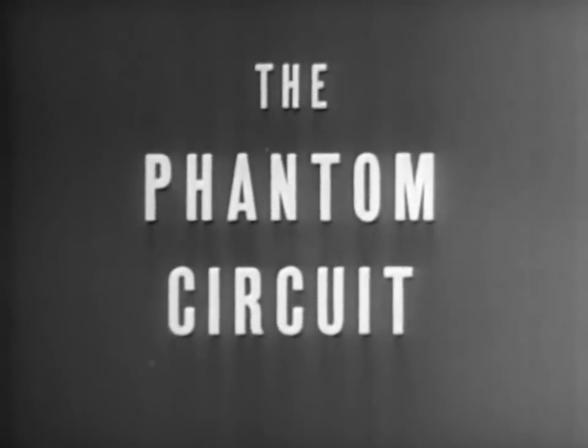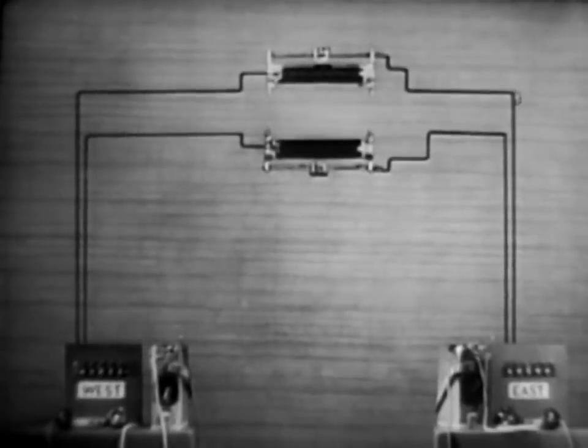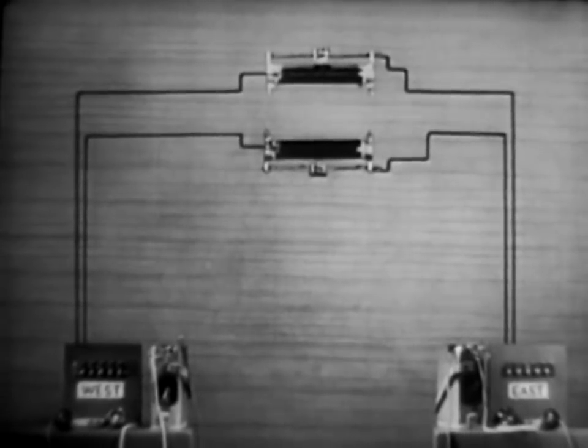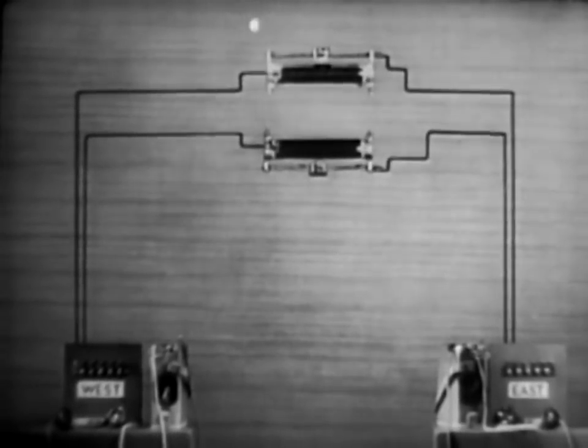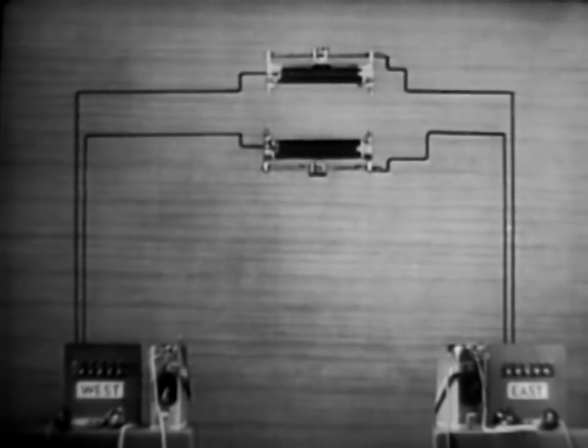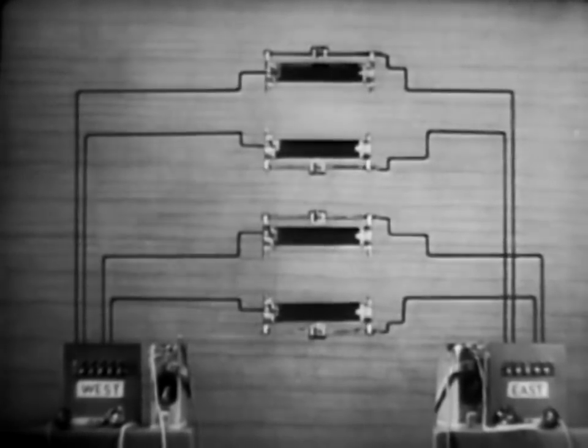There is another way to get a good extra channel cheaply and without the disadvantages of a ground return. This is to install a phantom circuit. The phantom is similar to the simplex. Instead of using the telephone circuit and the earth, however, it uses two telephone circuits.